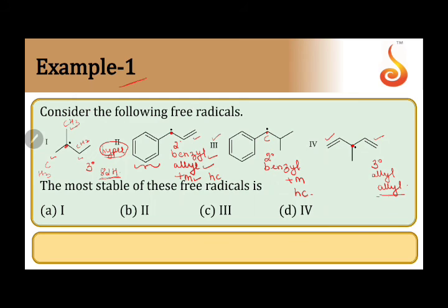So we can see here hyperconjugation of course, along with once again the plus M effect. Let's compare all these now. The most stable of these free radicals will be this fourth one itself, because in the fourth one we have tertiary, allyl - two groups are there, and it is tertiary.